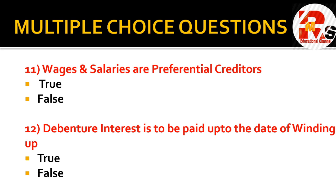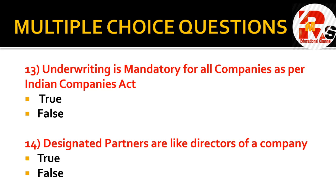Two more true/false questions: wages and salaries are preferential creditors — true or false? And debenture interest is to be paid up to the date of winding up — true or false? Wages and salaries are indeed preferential creditors, so that is true. For debenture interest, until the company makes payment, it must keep paying interest up to the date the company is wound up. Both answers are true. Debenture holders must receive interest for however many months the payment is delayed.